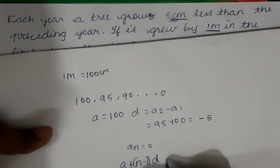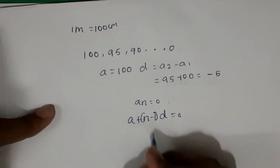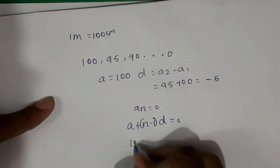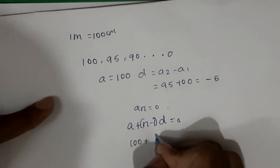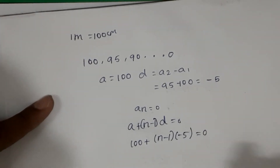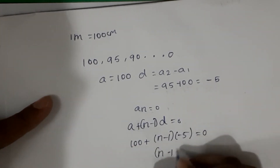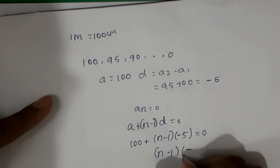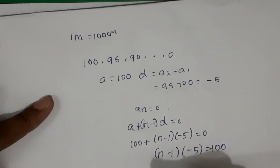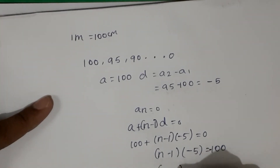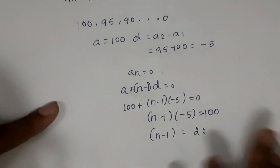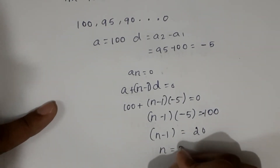Using the formula an = a + (n - 1)d = 0, we know a is 100. So: 100 + (n - 1) × (−5) = 0. This gives (n − 1) × (−5) = −100, so n − 1 = 20.